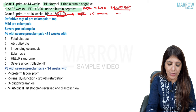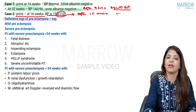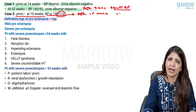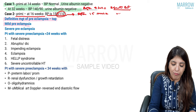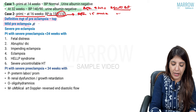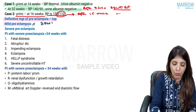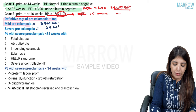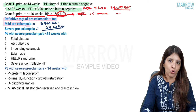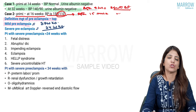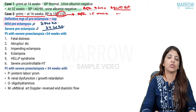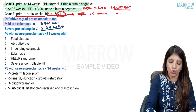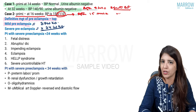The definitive management of preeclampsia or PIH is termination of pregnancy. In mild preeclampsia, termination should be done at 37 weeks. In severe preeclampsia, termination should be done at 34 weeks. All severe preeclampsia patients who are more than or equal to 34 weeks must have their pregnancy terminated.